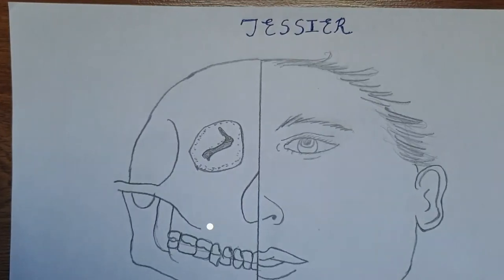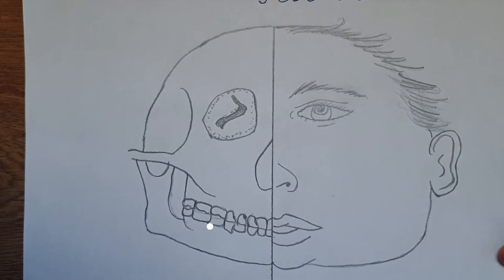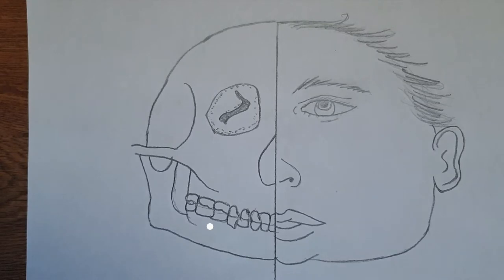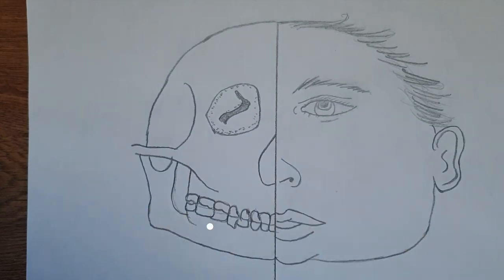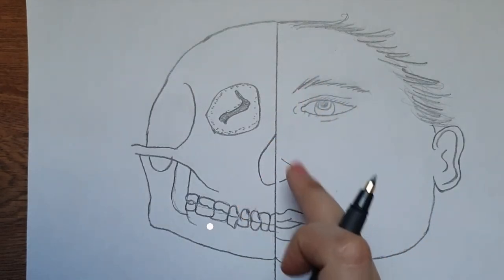Namaste everyone. Today I'm going to discuss the Tessier classification of craniofacial clefts, just for the completion of the previous discussions we had on cleft lip and palate. It's easy to sketch out the midline first, draw a soft tissue outline on one side and the bony outline on the other side, and then proceed so you can compare the clefts as we draw them. The clefts are classified into four categories: midline or median, paramedian, orbital, and lateral clefts.